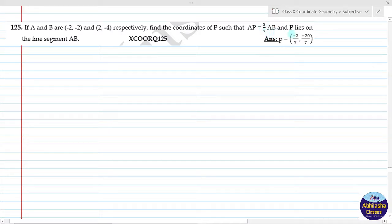The line segment given is AB. This is the AB line segment with two points given: A at (-2, -2) and B at (2, -4).